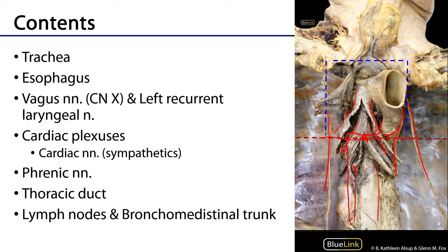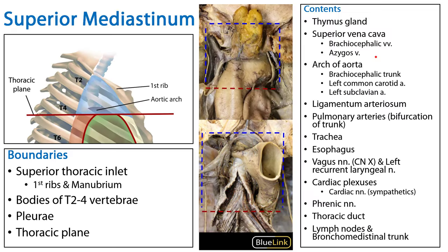Speaking of lymphatics, we'll find some lymph nodes in this region — tracheobronchial nodes around here — which feed into bronchomediastinal trunks that ascend the superior mediastinum heading towards the venous angles at the root of the neck.